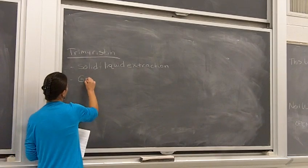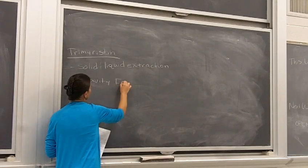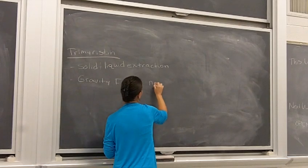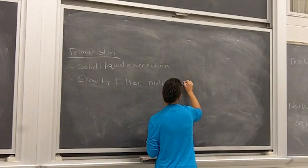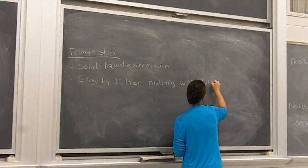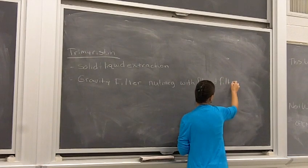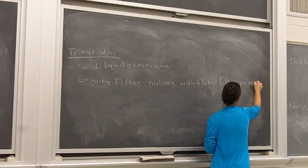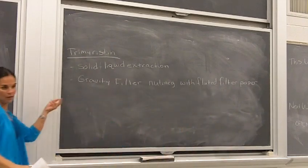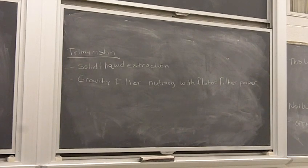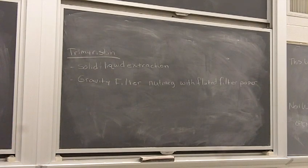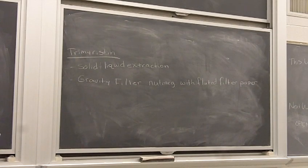Here's when we get to our fluted filter paper. We're going to gravity filter the nutmeg with fluted filter paper. This is a different type of filtration than vacuum filtration. With gravity filtration you typically use it when you don't want the solid — when you want the solid, you use vacuum filtration. In this case, we're going to stir our nutmeg with our ethyl ether, and we'll still have parts of the nutmeg left since trimeristin isn't all of the nutmeg, so we've got to filter that solid nutmeg away.